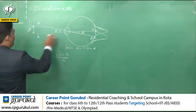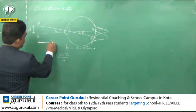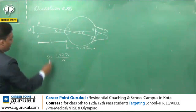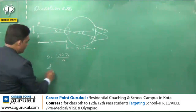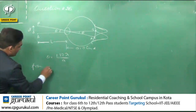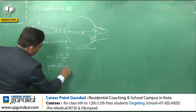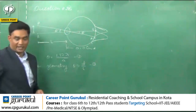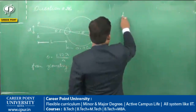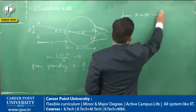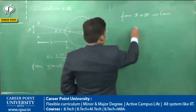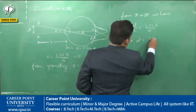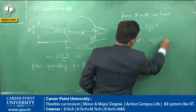From the geometry, it is clear that theta can also be written as D by L, where L is the distance, since theta is a small quantity. This is the first relation and theta equals 1.22 lambda by A is the second relation. From these two relations, D by L equals 1.22 lambda by A, or D equals 1.22 lambda L by A.